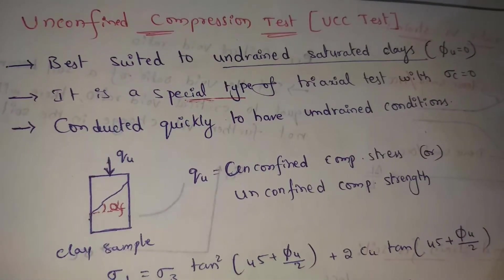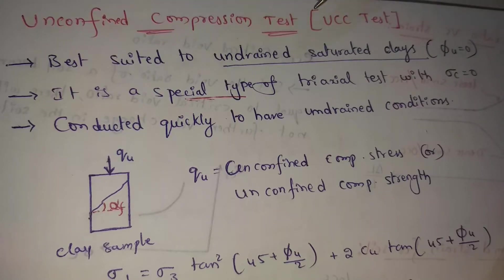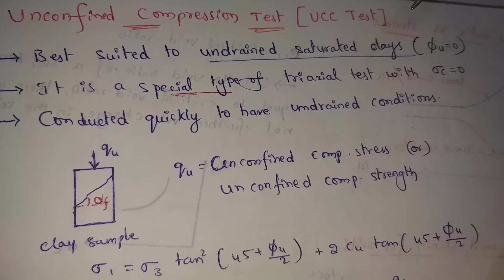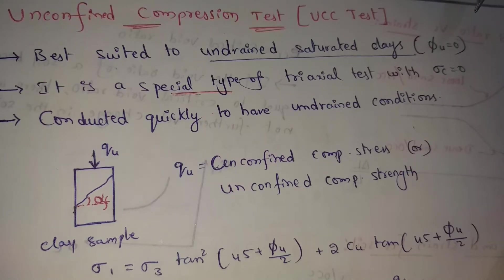Next topic: Unconfined Compression Test, also called the UCC test. This Unconfined Compression Test is best suited to undrained saturated clays. The apparent angle of shearing resistance φu is equal to 0.